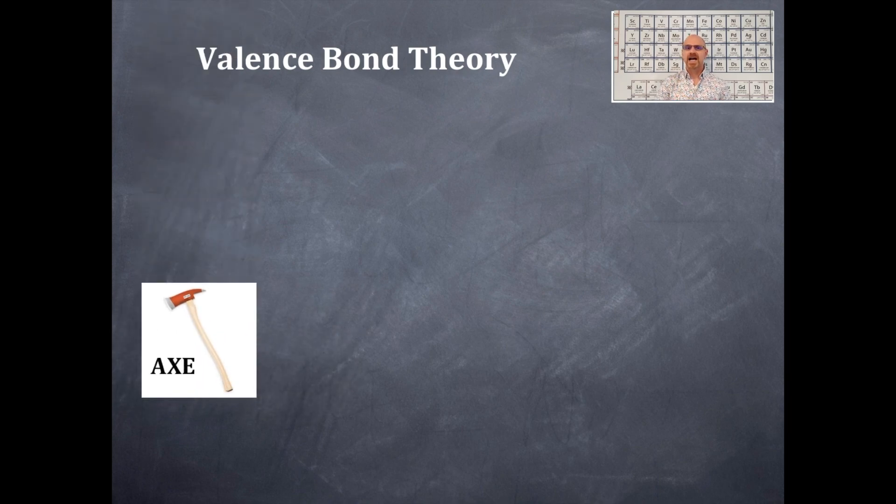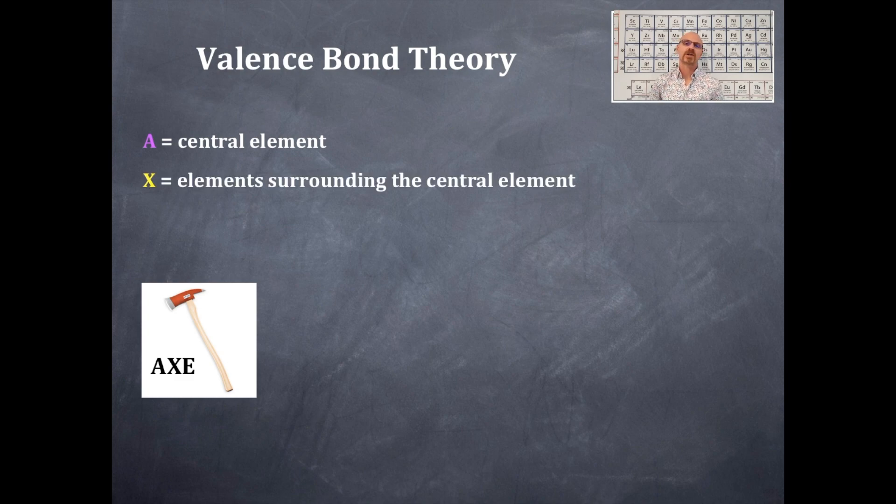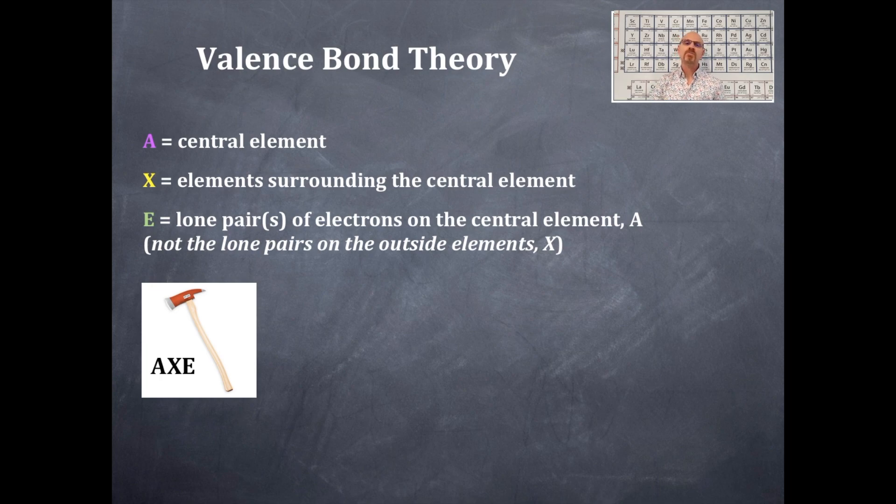So here we go. The AXE. What is the AXE? The A is the central element of the AXE. The X are the surrounding elements around the central element and the E is a lone pair or lone pairs of electrons on the central element. They are on the A.